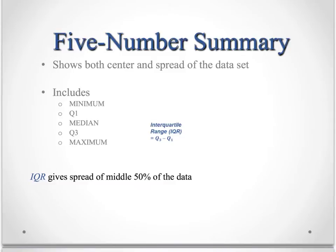Now the five number summary pulls all this together, showing both the center and the spread, because it includes the minimum, the first quartile, the median, the third quartile, and the maximum.